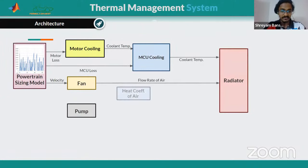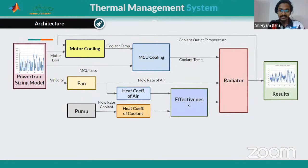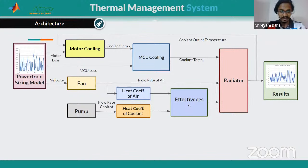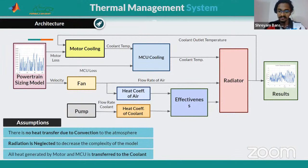This is the architecture of our cooling system. Using the powertrain sizing model and considering the endurance event of formula student competitions, we calculated the motor loss and motor controller loss. With those losses, we calculated coolant temperature from the outlet of the motor and motor controller unit, sending it to the radiator and returning the cooled coolant back. We used characteristic curves of the fan and pump to calculate flow rates, then calculated coolant temperatures throughout the system using an NTU-effectiveness model for the radiator heat transfer coefficient. We assumed no convection or radiation heat transfer to atmosphere, and all heat generated is transferred to the coolant.